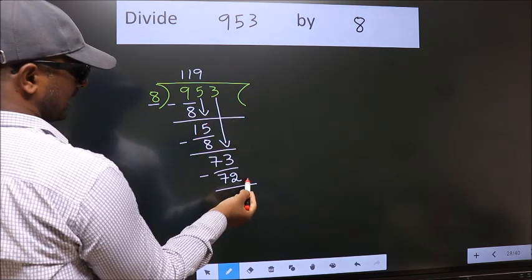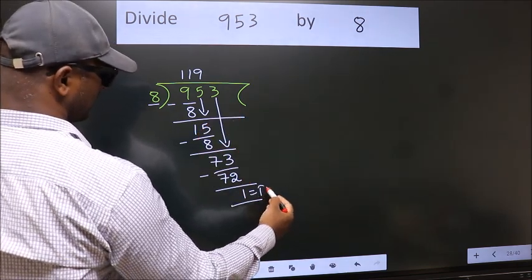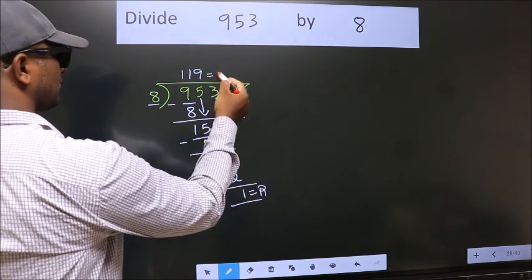No more numbers to bring it down. So we stop here. This is our remainder. This is our quotient.